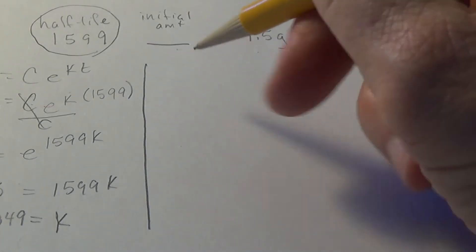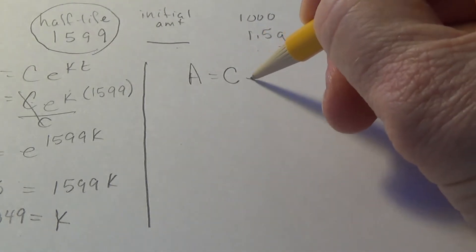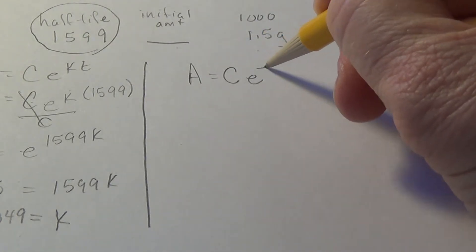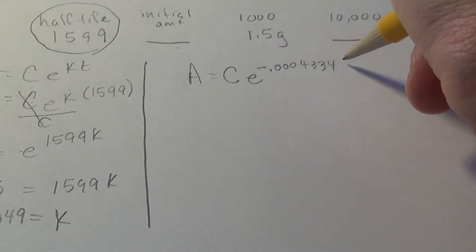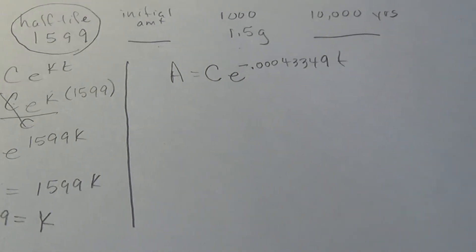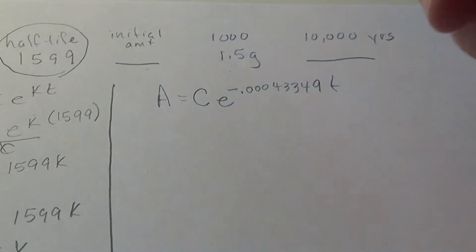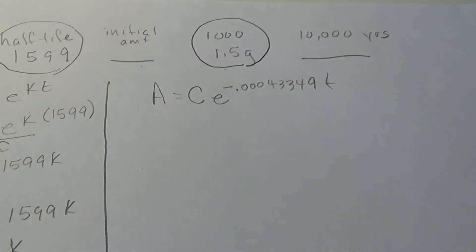So let's feed what we have into the equation. A equals C, E to the minus 0.00043349, T. All right, so now I'm going to borrow from the less potent one, the one that didn't have enough to get us started, but it has enough information to keep us going here.